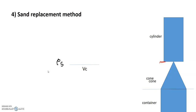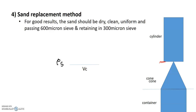In the previous video, we talked about 3 methods: the Water Displacement Method, the Submerged Mass Density Method, and the Core Cutter Method. In this video, let's talk about the next 3 methods: the Sand Replacement Method, the Rubber Balloon Method, and the Radiation Method. Let's start with the Sand Replacement Method.